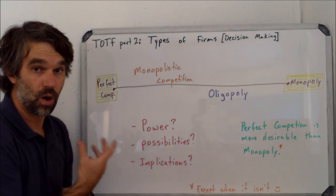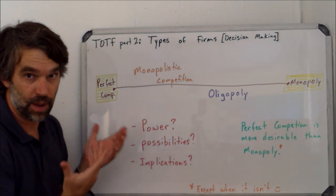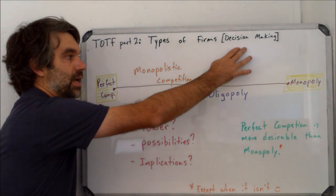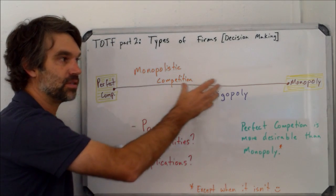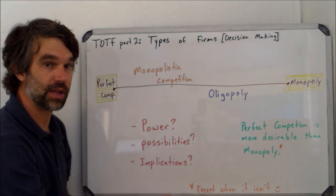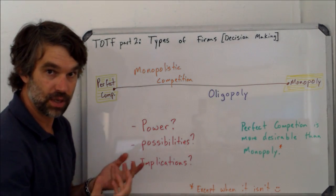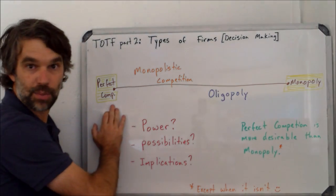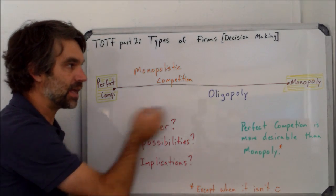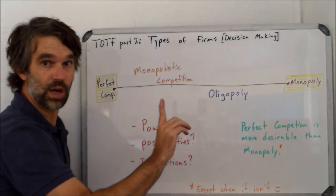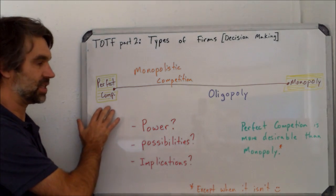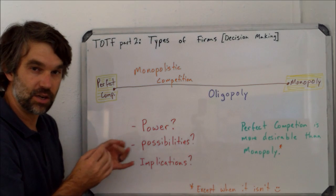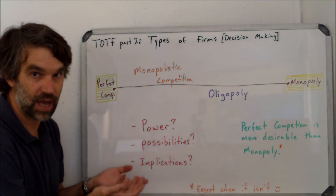Once we understand how Theory of the Firm works — how a firm operates and how it might make its choices — then we start to look at the idea of decision making and how different types of firms can make decisions differently. As we often do in any sort of social studies course, we look at two things that are the exact opposite of each other: a monopoly, where there's one business controlling the market, and perfect competition, where there are so many businesses that no single business has any effect on the market.